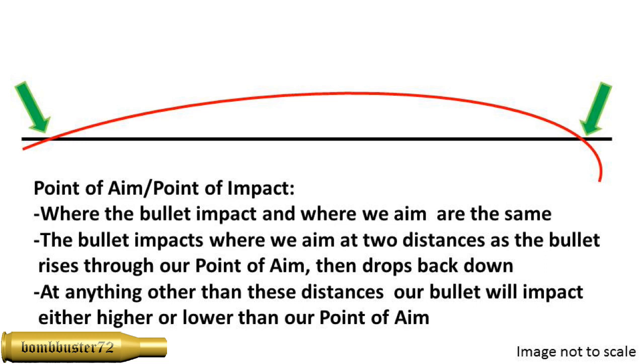This actually only happens at two distances as we're firing a bullet, as it arcs through our line of sight, and then as it drops back down through that line of sight. Anything other than these distances, and our bullet will impact either high or lower than our point of aim.